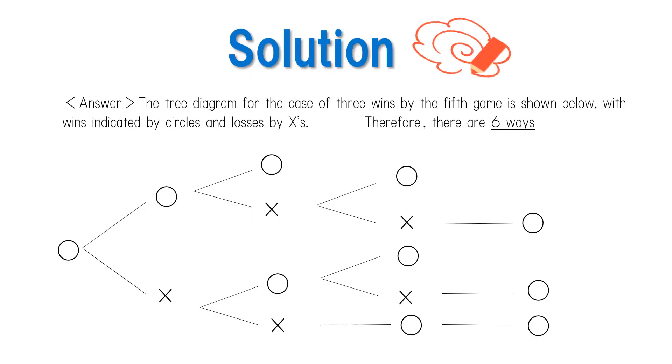Now let's check our answers. The tree diagram for the case of three wins by the fifth game is shown below, with wins indicated by circles and losses indicated by x's. Therefore, there are six ways.